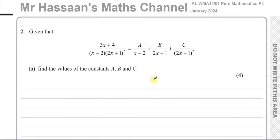Here we have a question. Part A is about partial fractions — we have to split up this algebraic fraction into separate parts. In this particular question they kindly gave us the form in which it's going to be split up into. And we can see here what happens when you have what's called a repeated factor — 2x plus 1 squared. That's called a repeated factor when the bracket is squared, and this is how you deal with it.